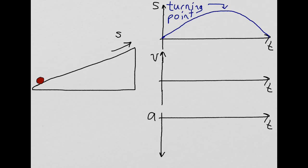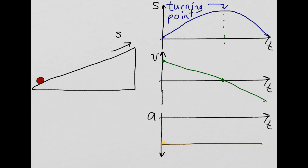Looking at velocity, you start with a positive velocity. When you get to the very top, you are momentarily stopped — zero velocity. Then as you're going back down, you get a negative velocity. The slope of the position graph is given by the velocity graph, which is a straight line — a continuously decreasing velocity with respect to time. It starts off positive, goes through zero, ends up negative. Acceleration is the slope of the velocity graph, and that is always a negative constant value.